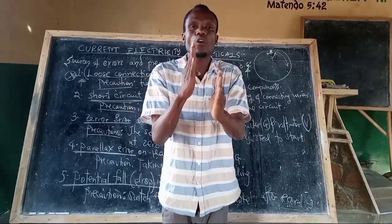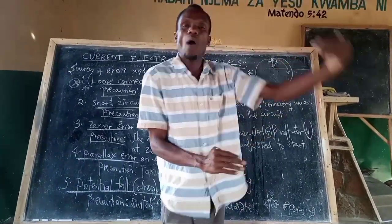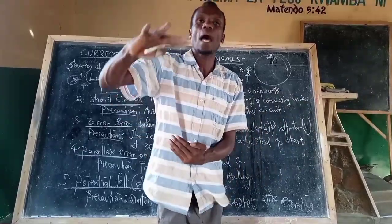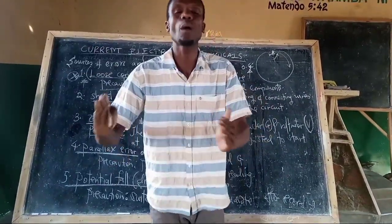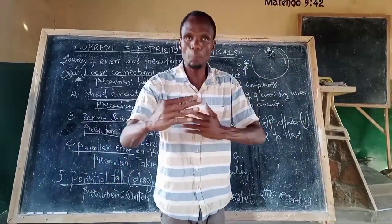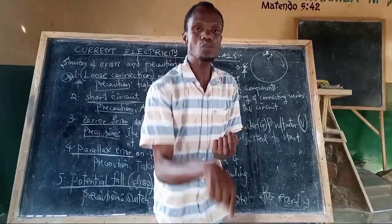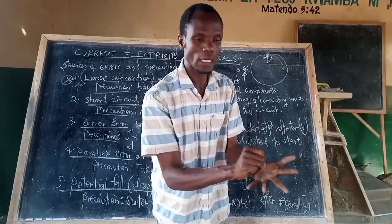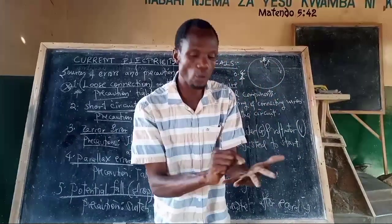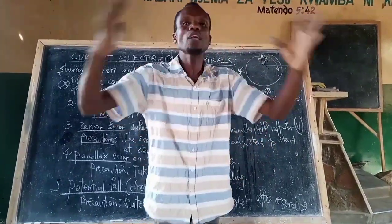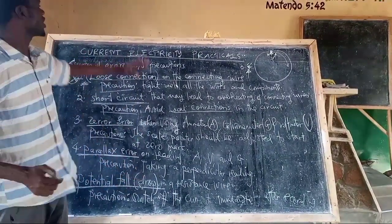Endapo utayaacha hiyo on, kiasi kwamba betri itapungua nguvu. Kwa hivyo reading ya kwanza haitakuwa sawa na reading ya pili, na reading ya tatu haitakuwa sawa na mwenzake, kwa sababu kutakuwepo na potential drop. Kwa hiyo, kuhepusha hiyo potential drop, unapomalizika kulekodi experiment yako ya kwanza, unaswitch off, halafu unaendelea kulekodi, unaswitch on, off, on. Hiyo kuhepusha potential fall or drop ina resistance wire - lazima sasa switch off the current baada ya kurekodi, hili tena uwaze kwa nyingine.